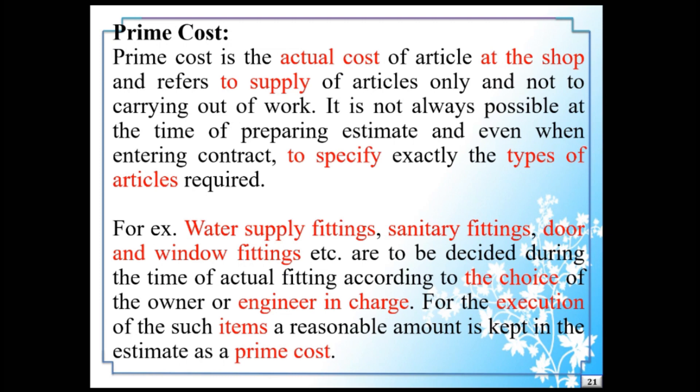Next one: Prime Cost. Prime cost is the actual cost of an article at the shop and refers to supply of articles only, and not to carrying out of work. It is not always possible at the time of preparing an estimate, or even when entering into a contract, to specify exactly the types of articles required.